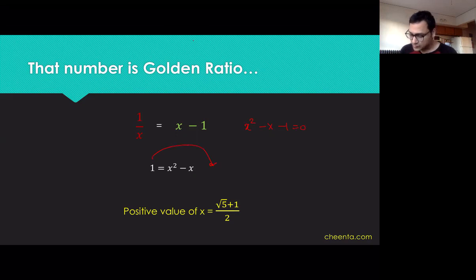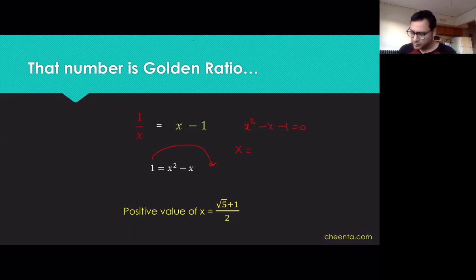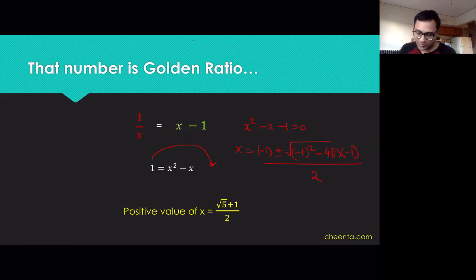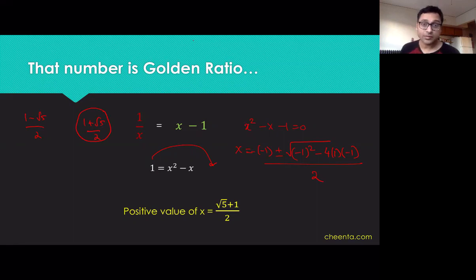And then you solve the value of x using the quadratic formula, also known as the Sridharacharya formula, which is minus b plus or minus the square root of b squared minus 4 times a times c, over 2. Of course you get two values: 1 minus square root of 5 over 2, and 1 plus square root of 5 over 2.